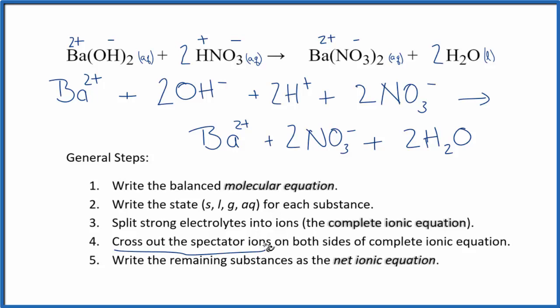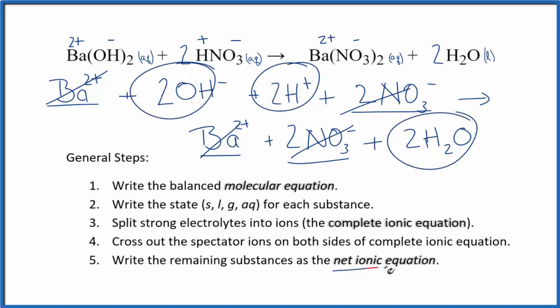Now we can cross out the spectator ions. They're on both sides of the complete ionic equation. So I see Ba plus here in the reactants. I also have it in the products. I can cross that out. And then it looks like I have 2 nitrate ions in the reactants and 2 in the products. I'll cross those out, but everything else is unique. And that is the net ionic equation. So let me clean this up, add the states in, and then we'll have a nice looking net ionic equation for BaOH2 plus HNO3.